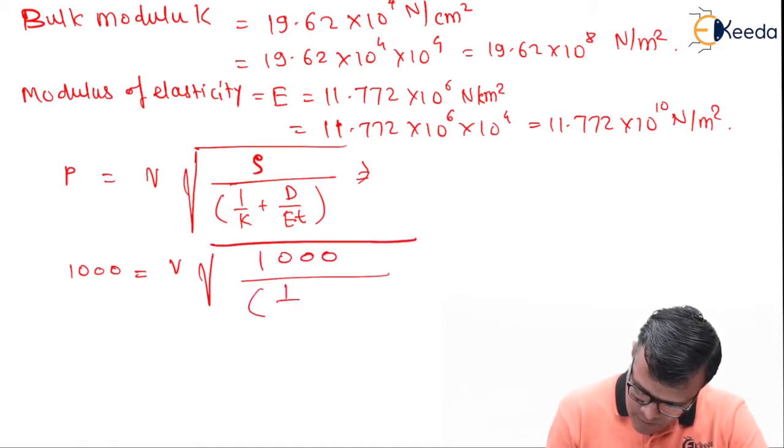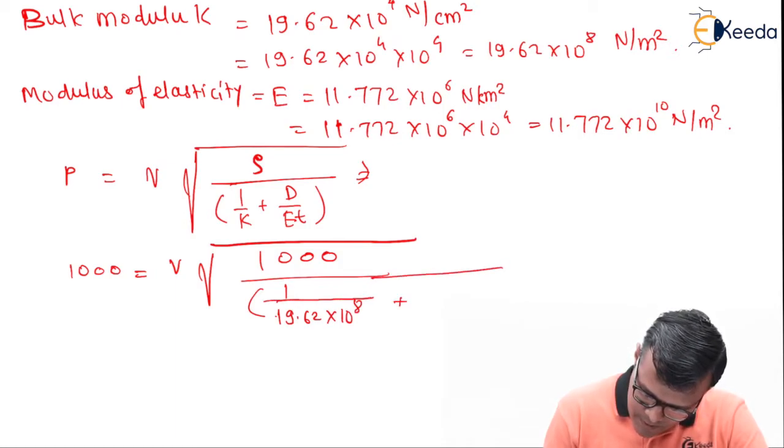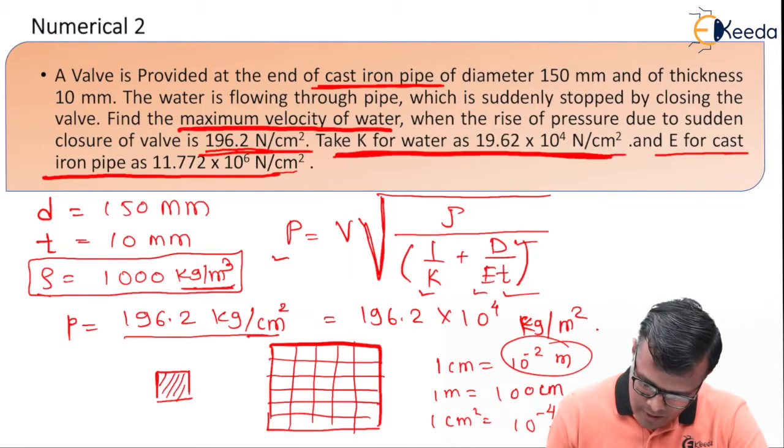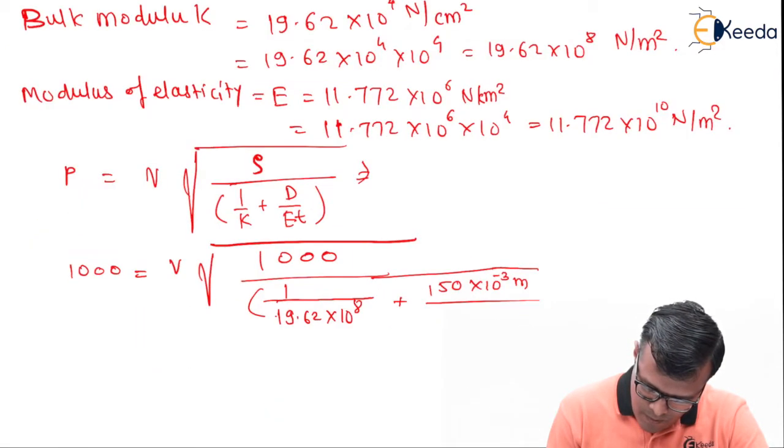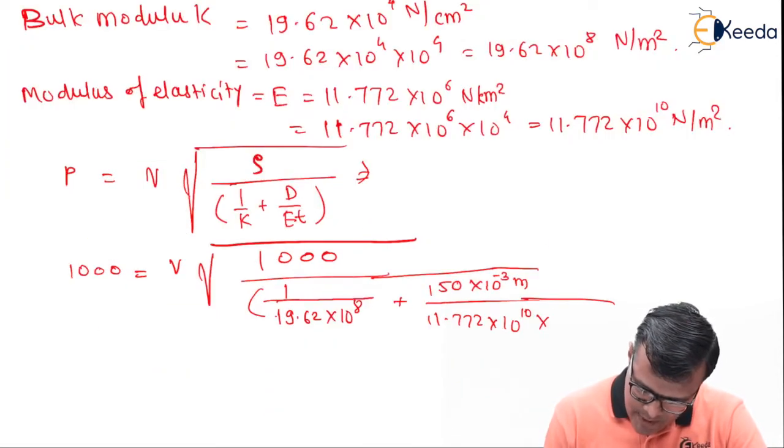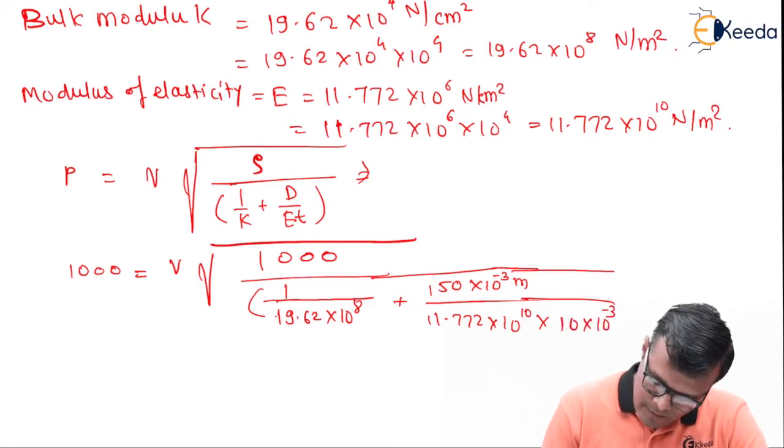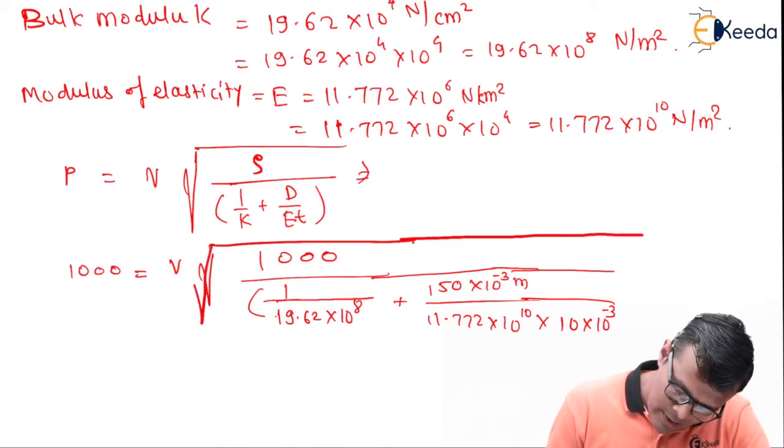ρ is 1000. 1 upon K is 19.62 × 10^8, plus D is 150 mm, 150 × 10^-3 meter. E value is 11.772 × 10^10. The thickness value is 10 mm, so 10 × 10^-3. All these things are under root sign.